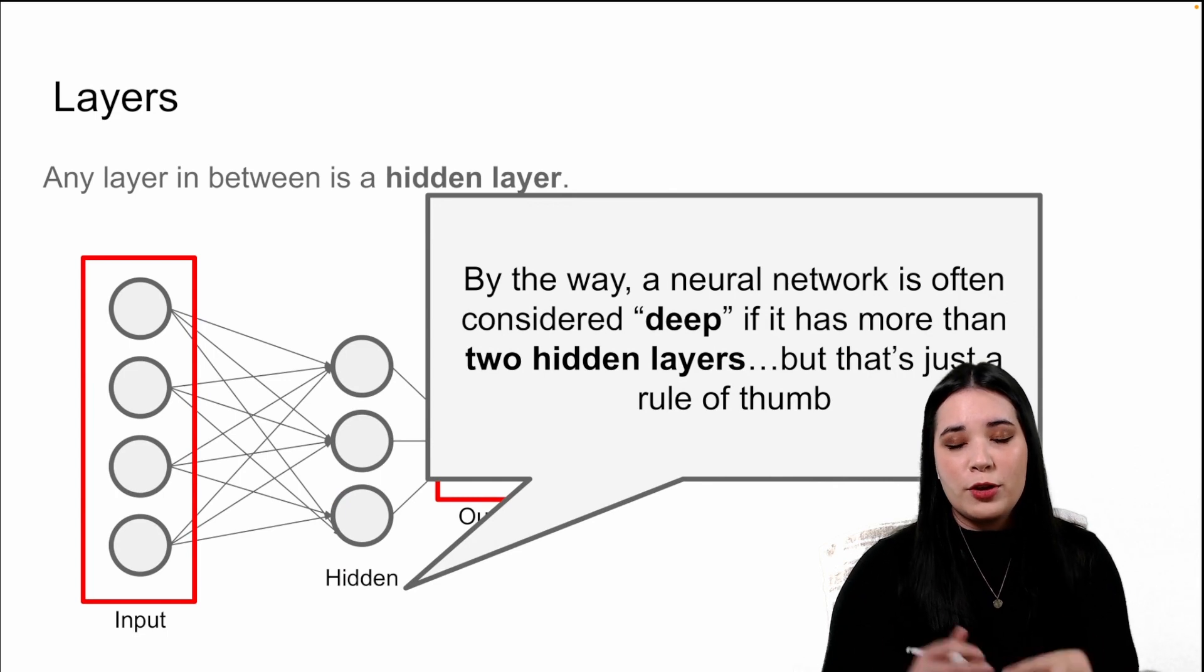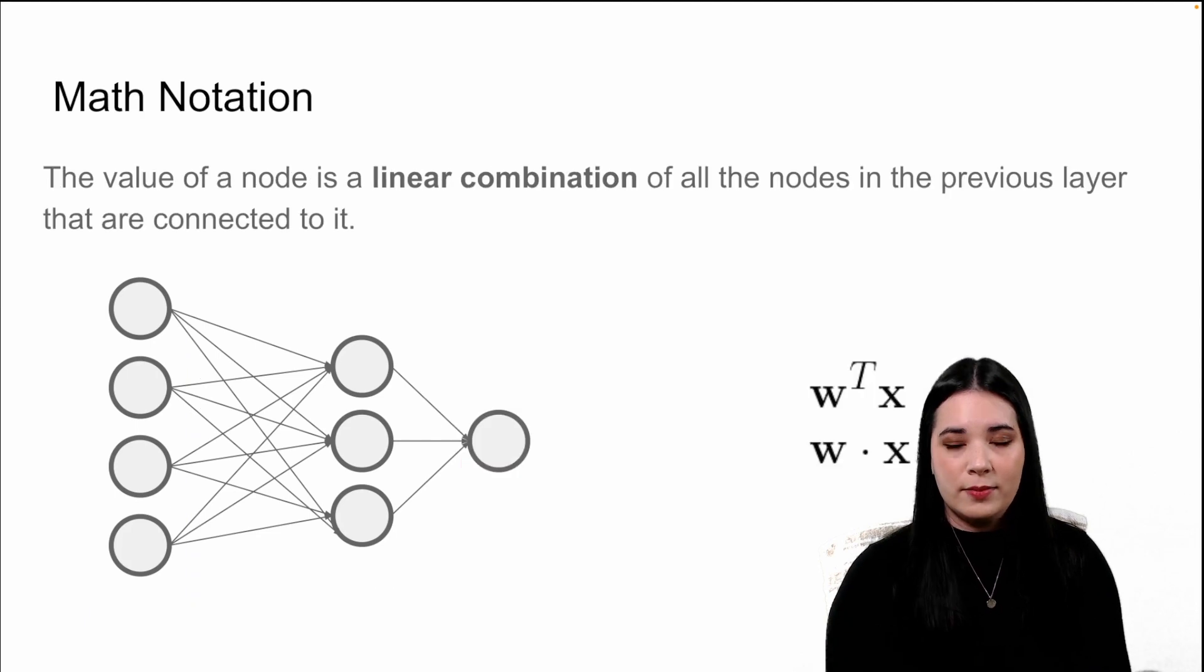And neural networks can have multiple hidden layers. Typically, when we refer to deep learning, we're talking about neural networks that have at least two hidden layers.